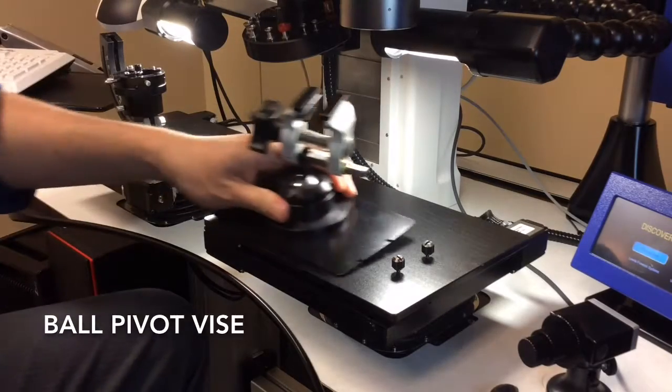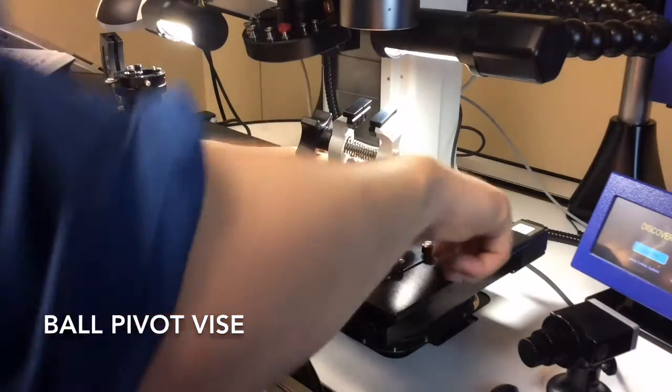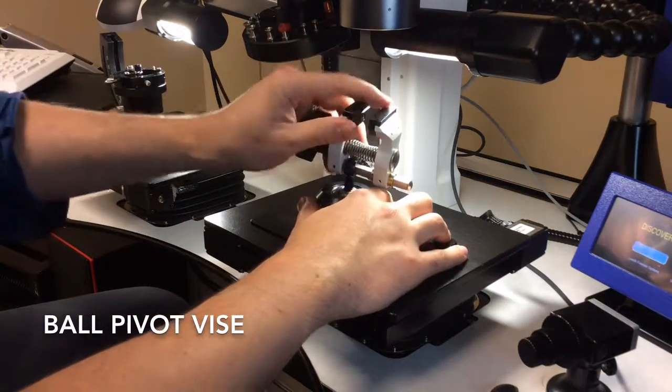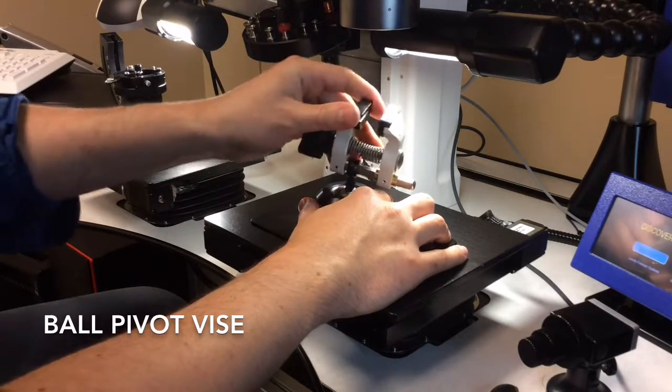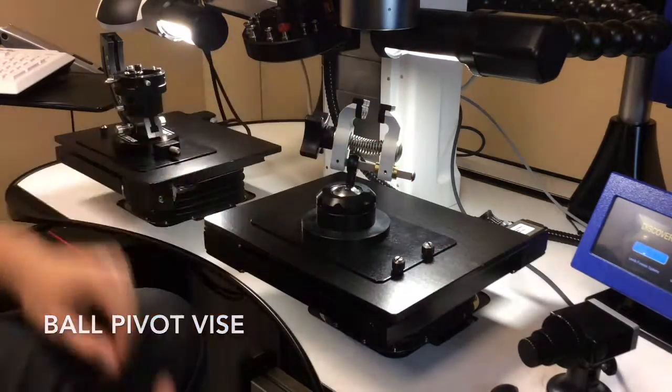The next holder to showcase is our vise. Our vise is a ball pivot Delrin tipped vise that allows you to tip, tilt, and rotate to allow you to get the best angle of your evidence.